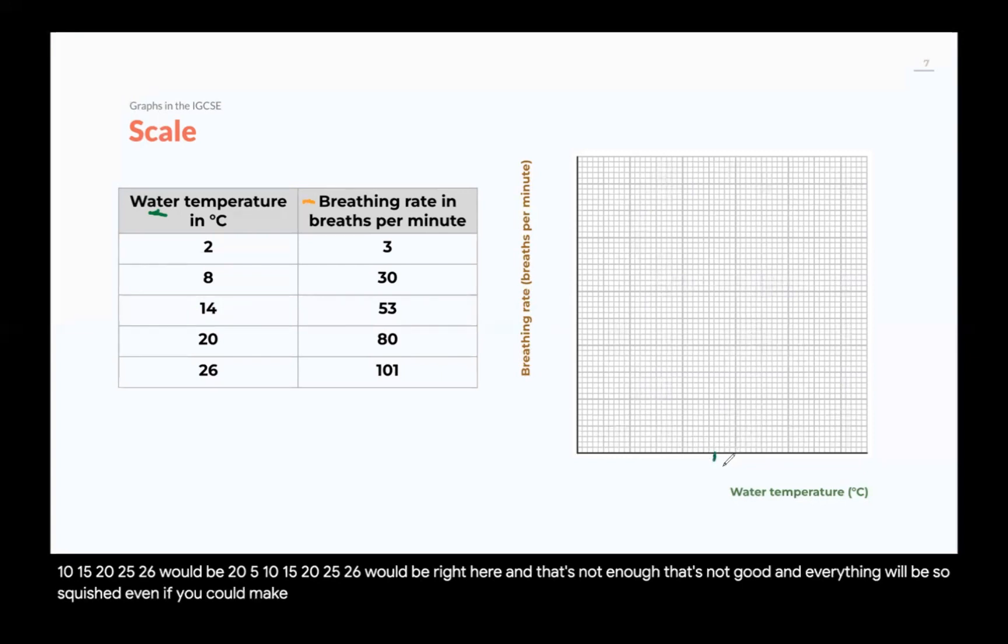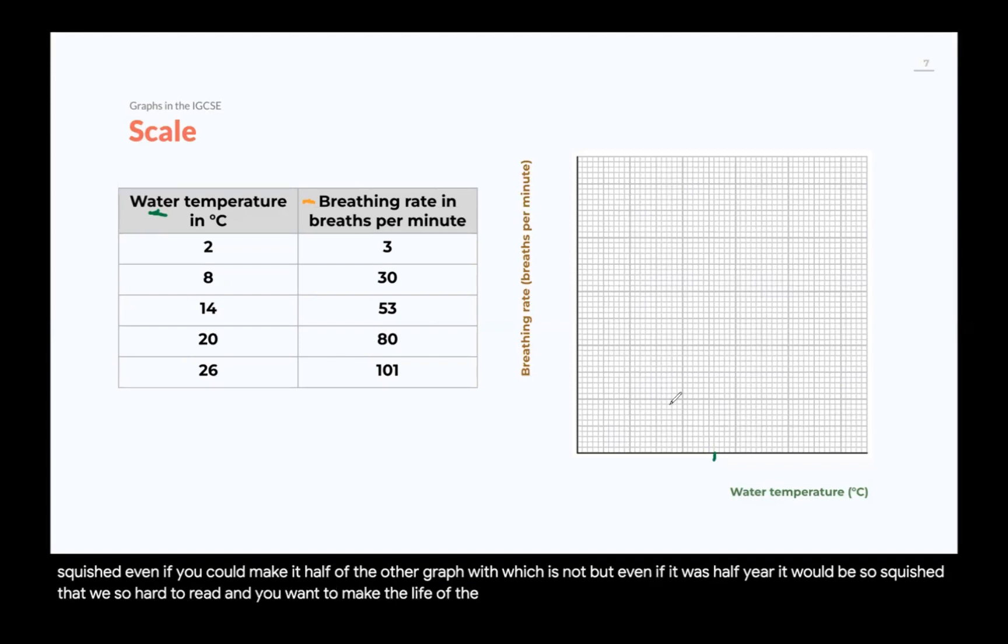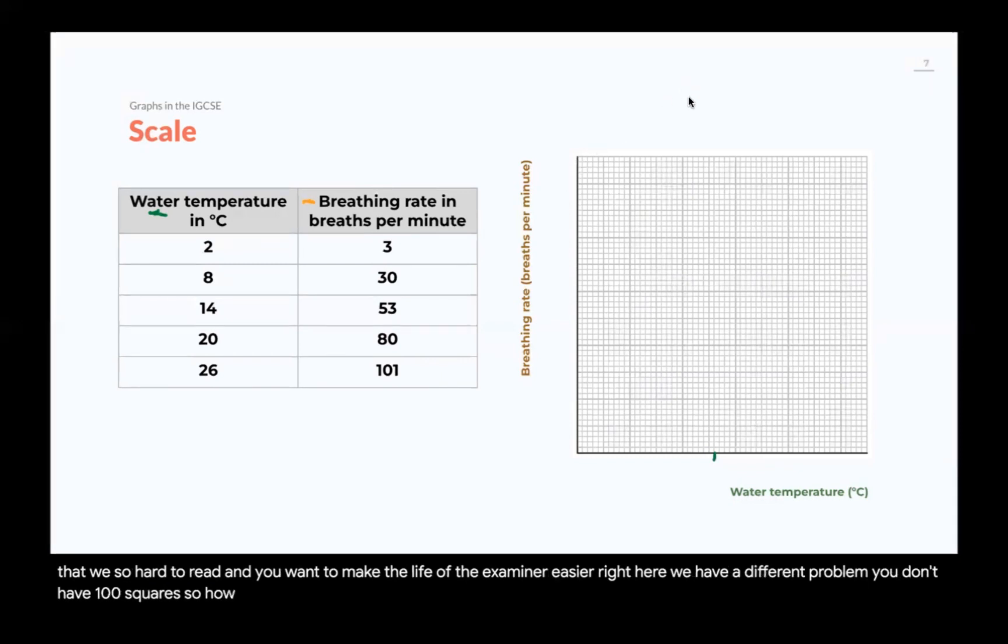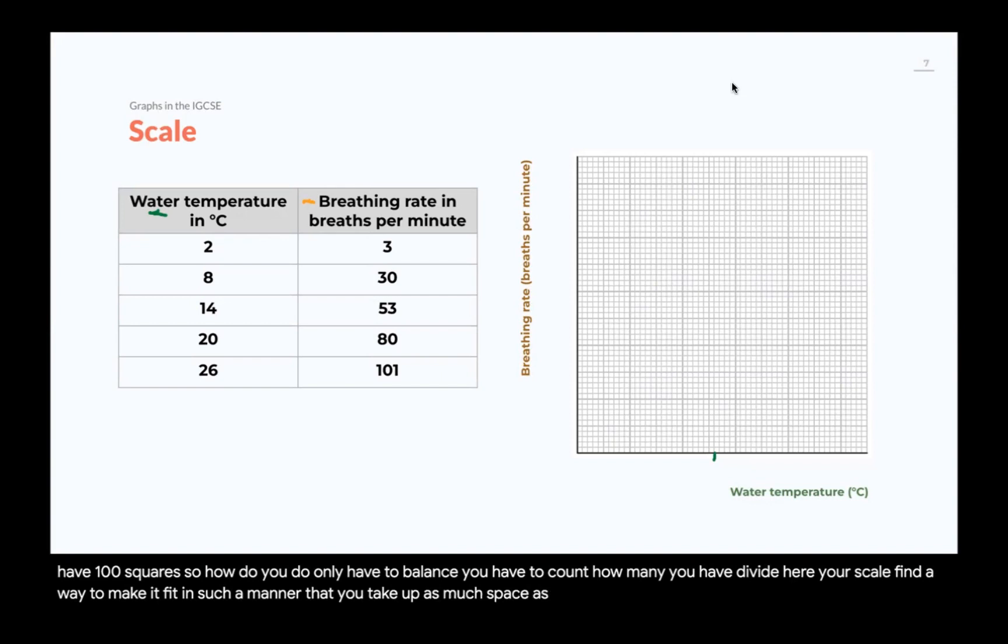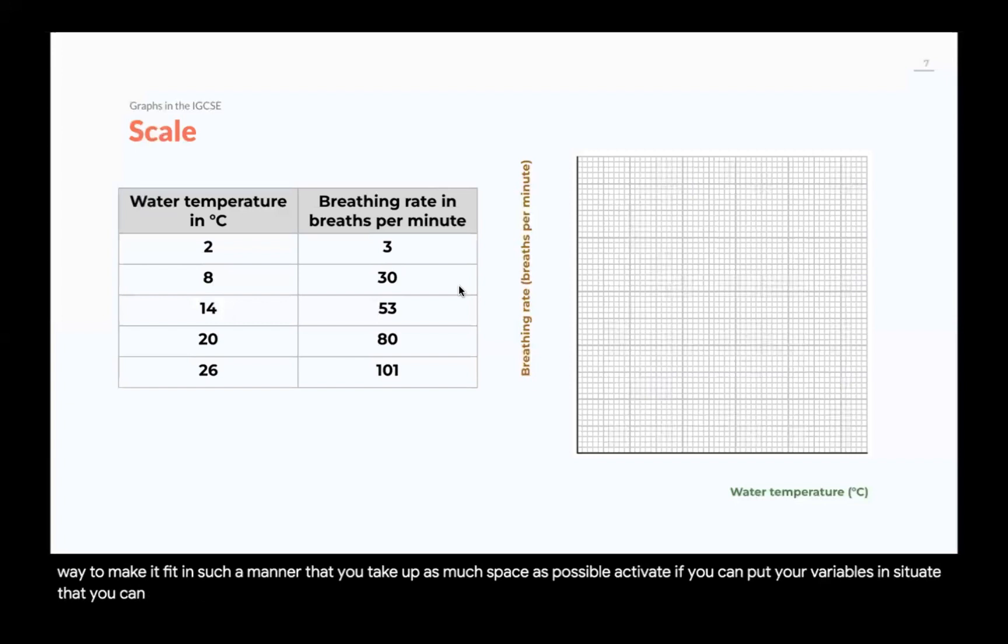Even if you could make it half of a graph, which is not, but even if it was half here, it would be so squished. That would be so hard to read. And you want to make the life of the examiner easier, right? Here, we have a different problem. You don't have 100 squares. So, how do you do? Well, you have to balance. You have to count how many you have. Divide here. Your scale. Find a way to make it fit in such a manner that you take up as much space as possible.